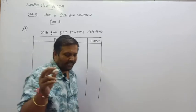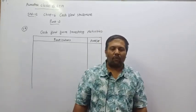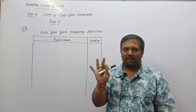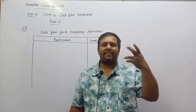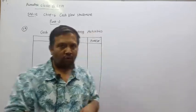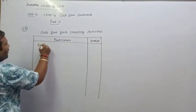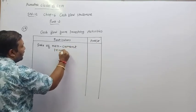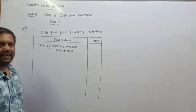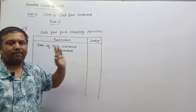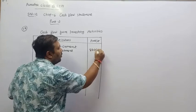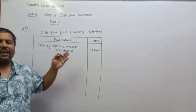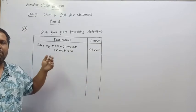Starting sum number 18, page 286. The first transaction written is: sale of non-current investment. Non-current means fixed. If you sell any investment, that means money is coming in — that is cash inflow. So write: Sale of non-current investment. When you sell any assets, money comes in — that is inflow — so write the amount as positive. Amount: 88,000 — inflow, so positive.